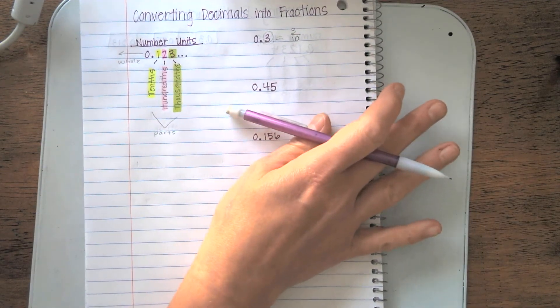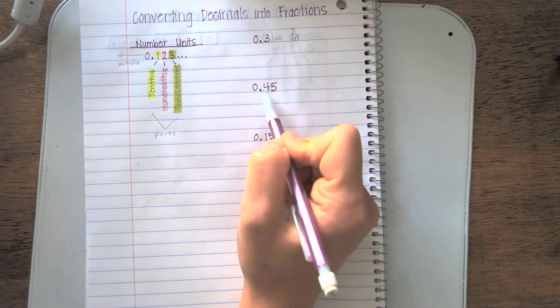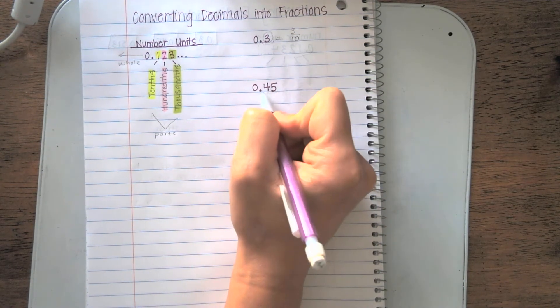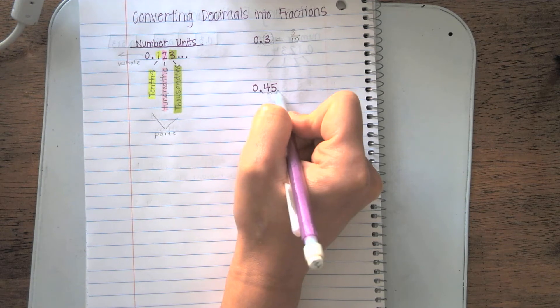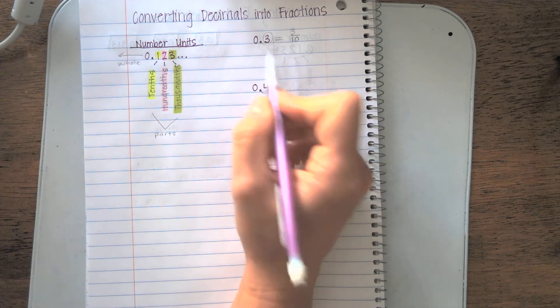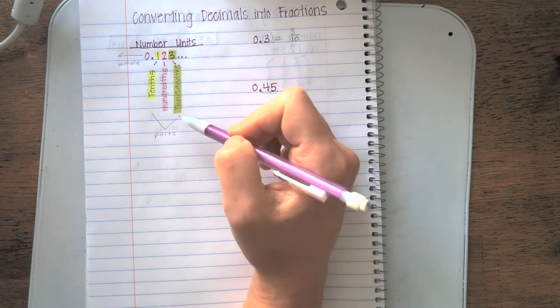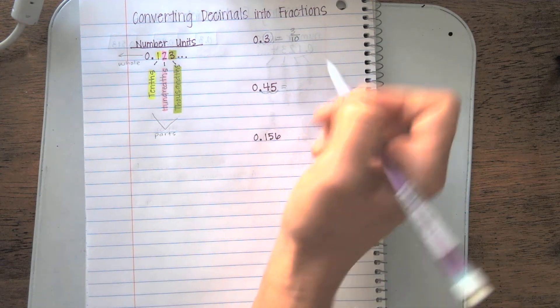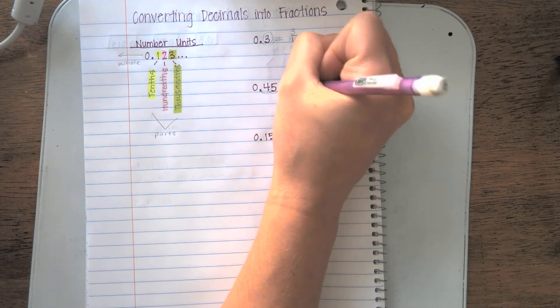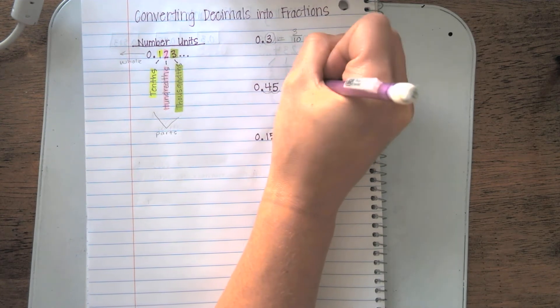Alright, let's look at the next problem. I see I have 0.45. I go one, two units over to the right of the decimal. If I refer back to my chart here, two units to the right is hundredths. This helps me get my fraction started. I'm going to put 100 in my denominator.